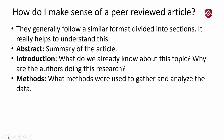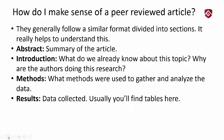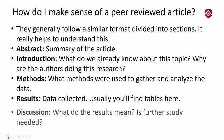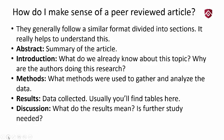Then there's going to be a methods section. What they'll tell you here is what methods were used to gather and analyze the data — how they performed the study, who they interviewed, who they surveyed, what kind of blood samples were taken. After that you get the results section: this is the data that was collected. Usually you'll find tables here — this is raw data. The results section shows what the data is.